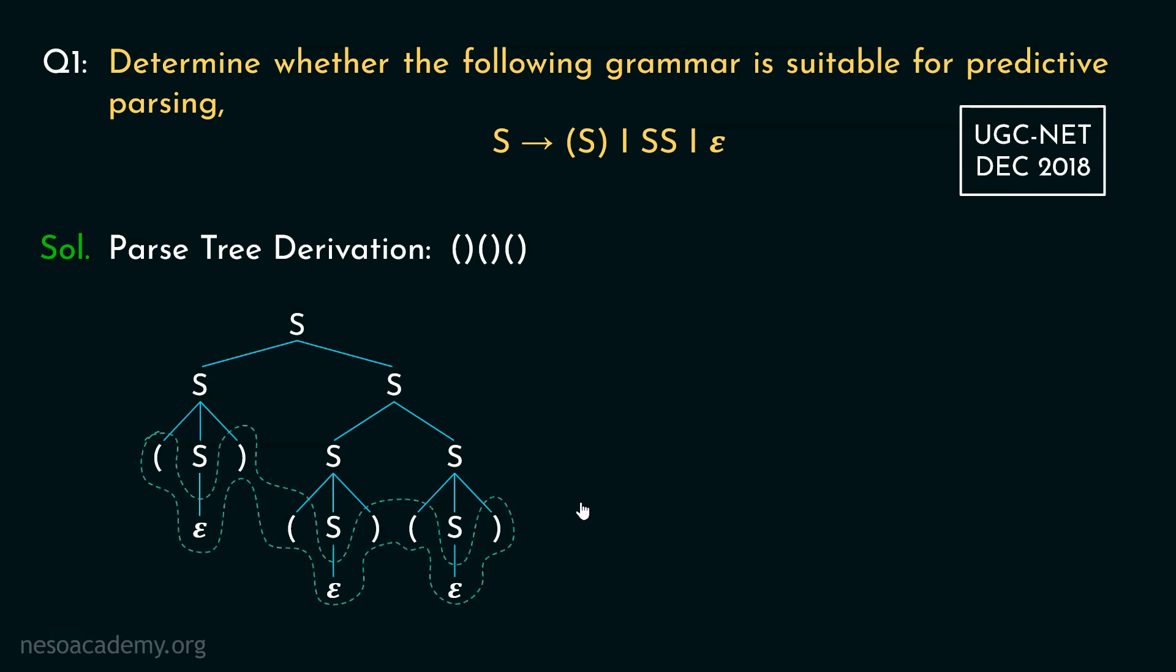Now traversing the tree from top to bottom and left to right, we obtain one, two, three, that is, three pairs of parenthesis. Let's now try out another way.